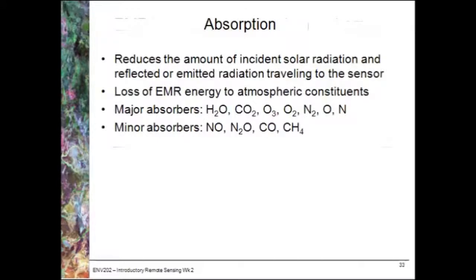Absorption, however, is actually going to subtract some of that radiance from getting back up to a sensor. It is reducing the amount of solar radiation that's reflected or emitted. We have a couple of major absorbers — mainly water, carbon dioxide, ozone, etc. — and some minor ones as well. Key thing here is that absorption reduces the electromagnetic radiation reaching the sensor, whereas scattering somewhat increases it.